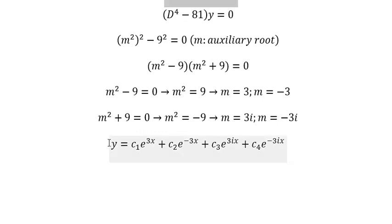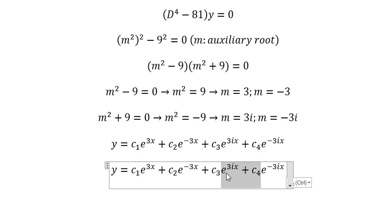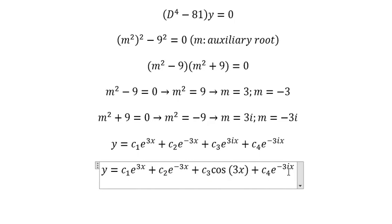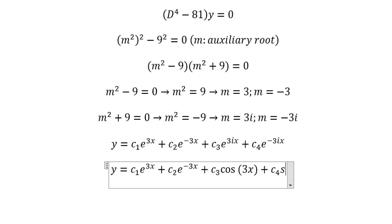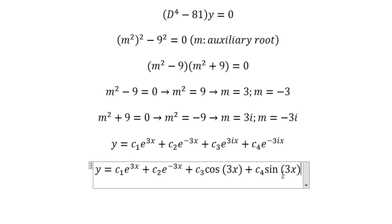Or we can write another way: y equals c1 e to the 3x plus c2 e to the negative 3x plus c3 cos of 3x plus c4 sin of 3x. That's the end. Thank you for watching.